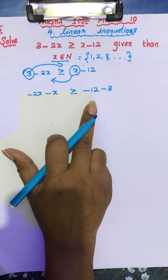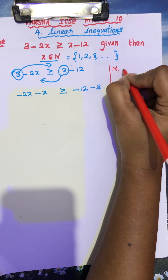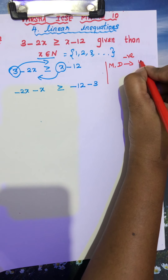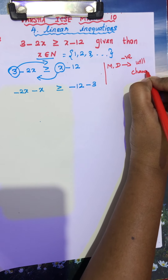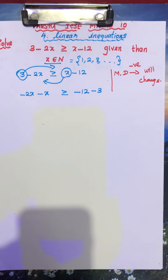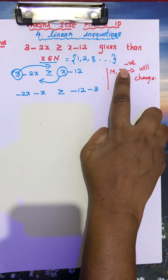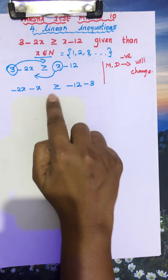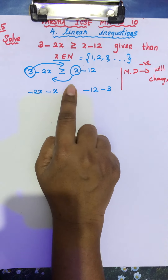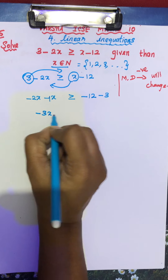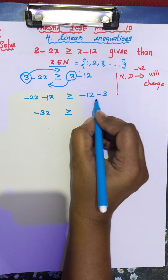For addition and subtraction, there is no change in the inequality sign. When the inequality is changing — if you are multiplying or dividing by a negative number, the inequality will change. For a positive number, there is no change. This is a very important thing. For the positive number, no change. For the negative number, whether it is multiplication or division, the inequality sign will change. So if you add, you will get minus 3x, and this is greater than or equal to minus 15.